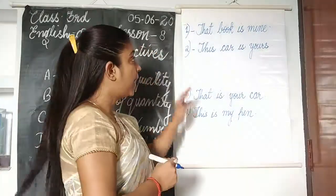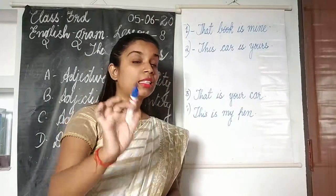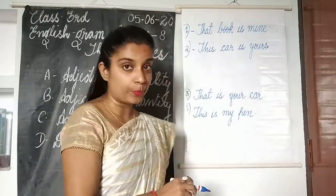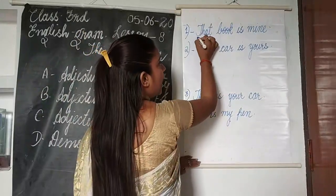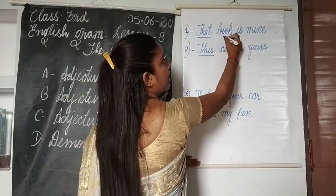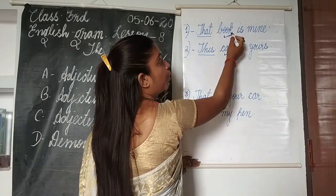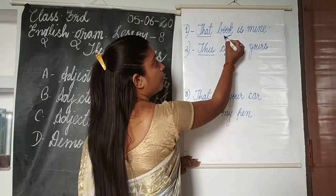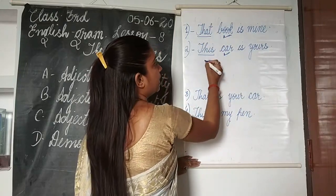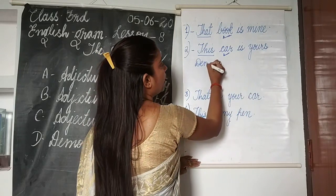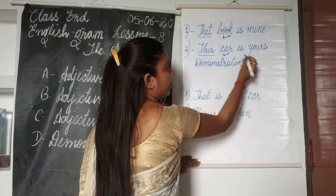I have written four sentences. In the first and second: 'That book is mine' and 'This car is yours.' In the third and fourth: 'That is your car' and 'This is my pen.' In the first two sentences, 'that' and 'this' are pointing at nouns — 'that book' and 'this car' — so they are demonstrative adjectives.